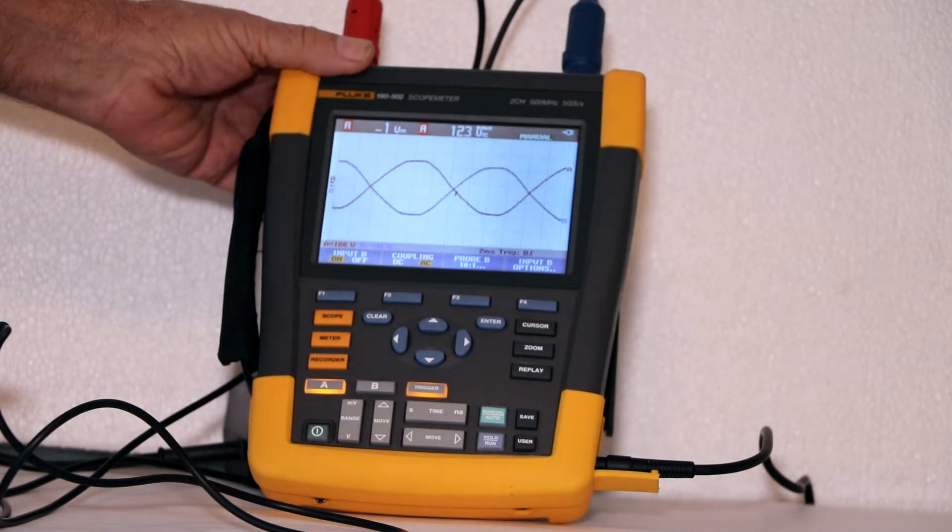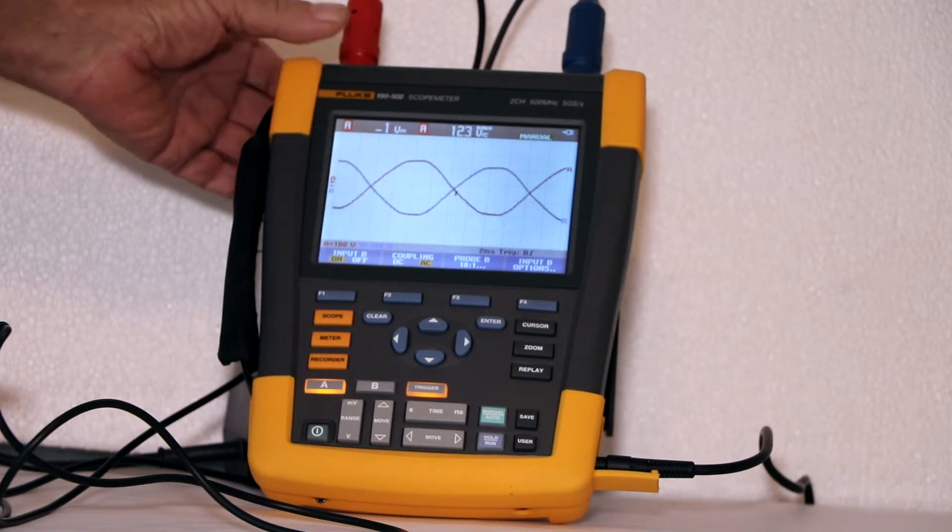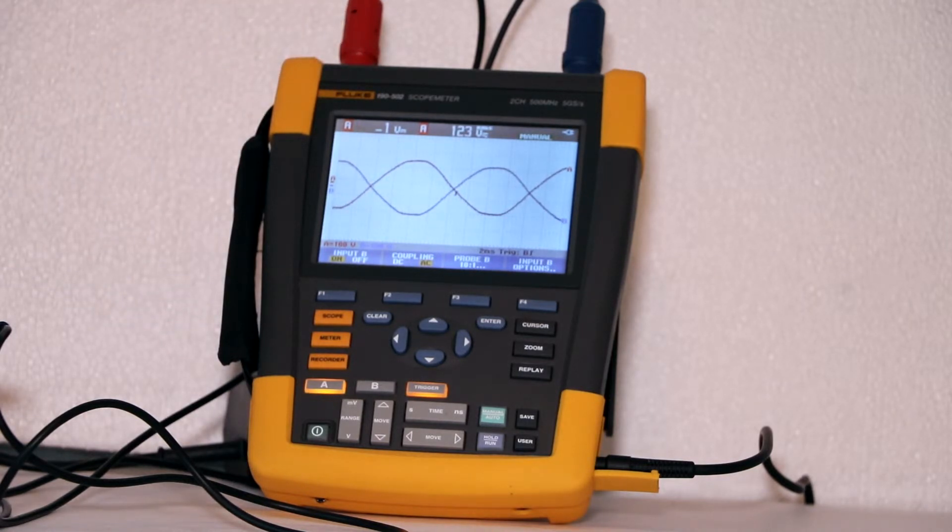Using a handheld battery operated oscilloscope that is totally isolated from the premises electrical system ground and that has channels that are isolated from one another such a hookup is permissible without fear of fault current.